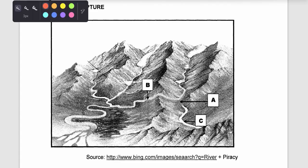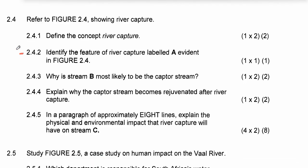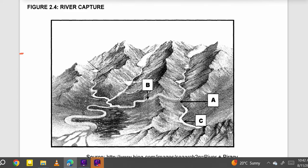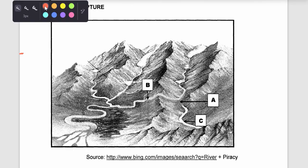The second question says: identify the feature of river capture labeled A evident in figure 2.4. This position pointed to by letter A is called a wind gap. It's a wind gap because you can see there is no more river or water body flowing there. Simple.